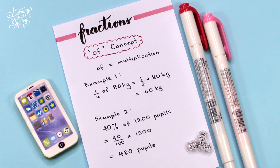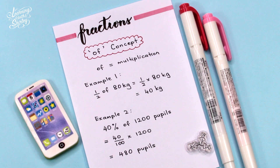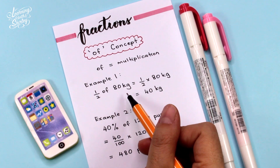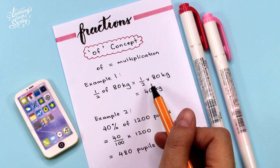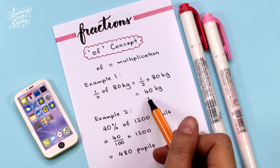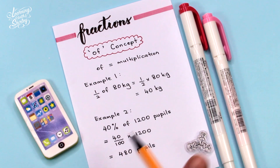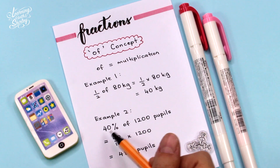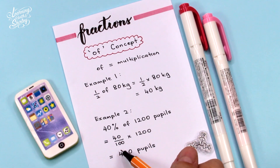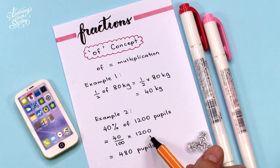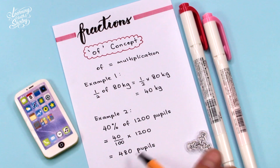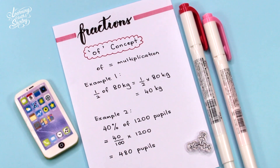What is the meaning of 'of' in fractions? 'Of' means multiplication. For example, 1 over 2 of 80 kg equals 1 over 2 times 80 kg, which is 40 kg. Another example: 40% of 1,200 pupils. 40% means 40 over 100, changed to times 1,200. When we calculate, we get 480 pupils. That's the answer.